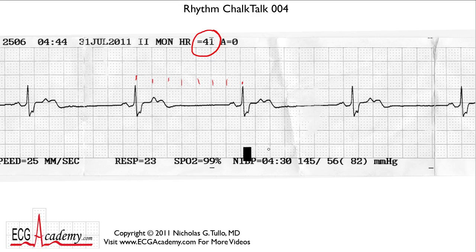Are there any P waves? We can see P waves — yes, indeed. If you look in front of the QRS complex, you see what looks like a normal P wave in front of every QRS. It's upright. The PR interval measures about 180 milliseconds or so. So that seems to be normal.